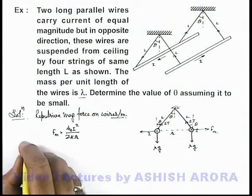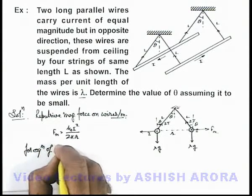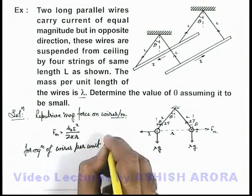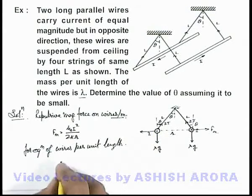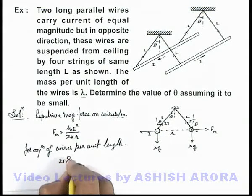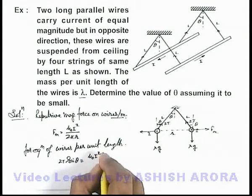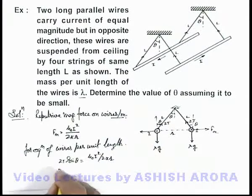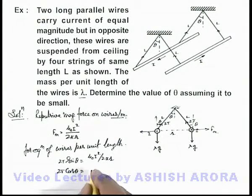For equilibrium of wires per unit length, we can simply balance out the forces. In this situation, 2t sin theta will be equal to the magnetic force, which is mu naught i squared by 2 pi r. And vertically it will be 2t cos theta, which will be balanced by the weight of the wire per unit length, that is lambda g.